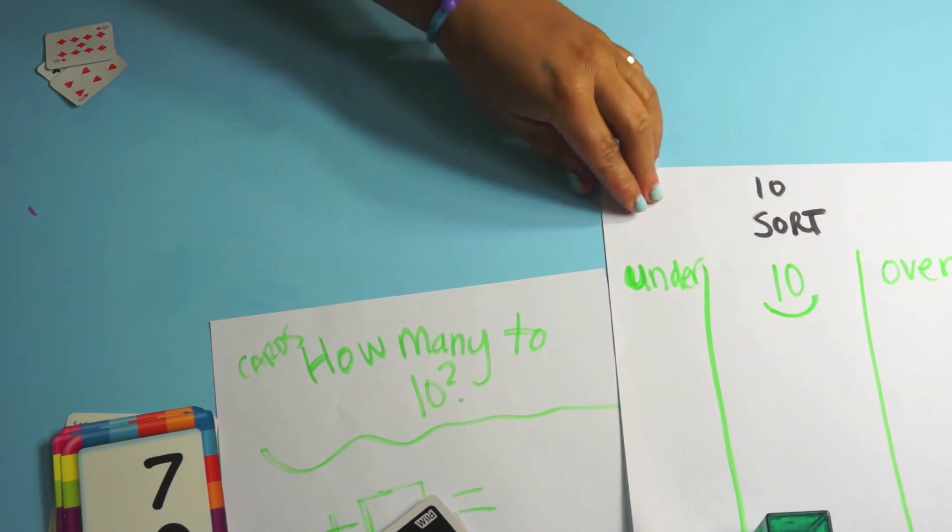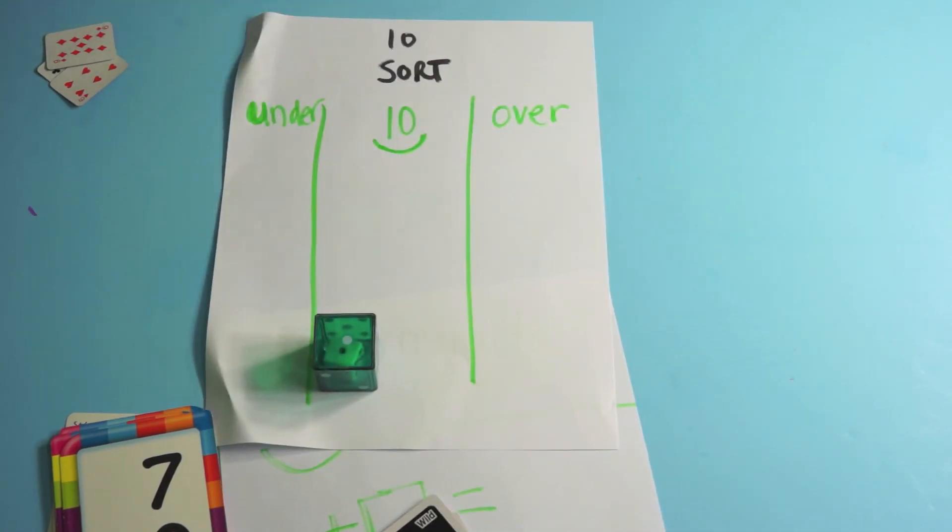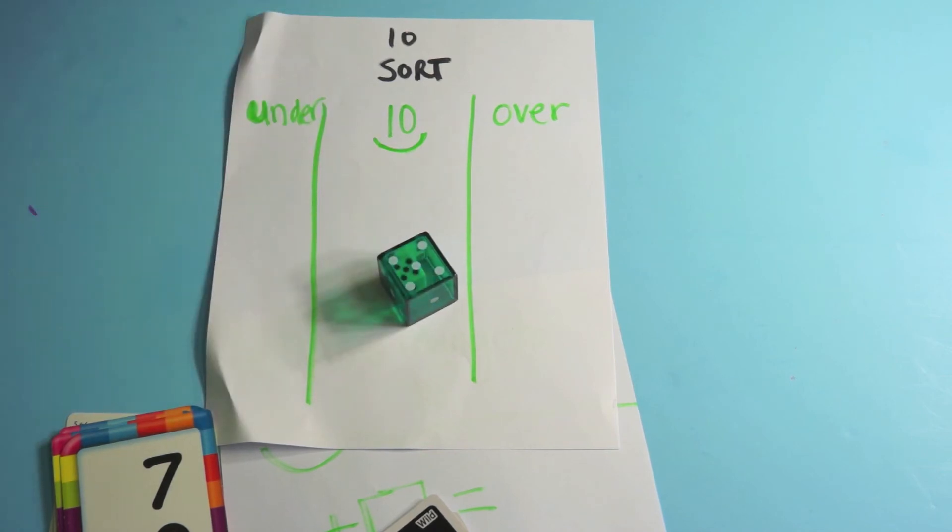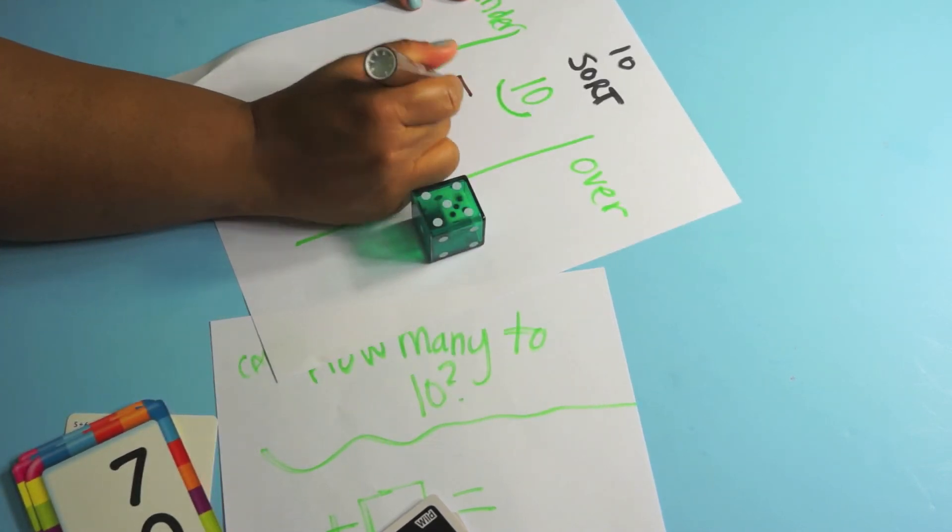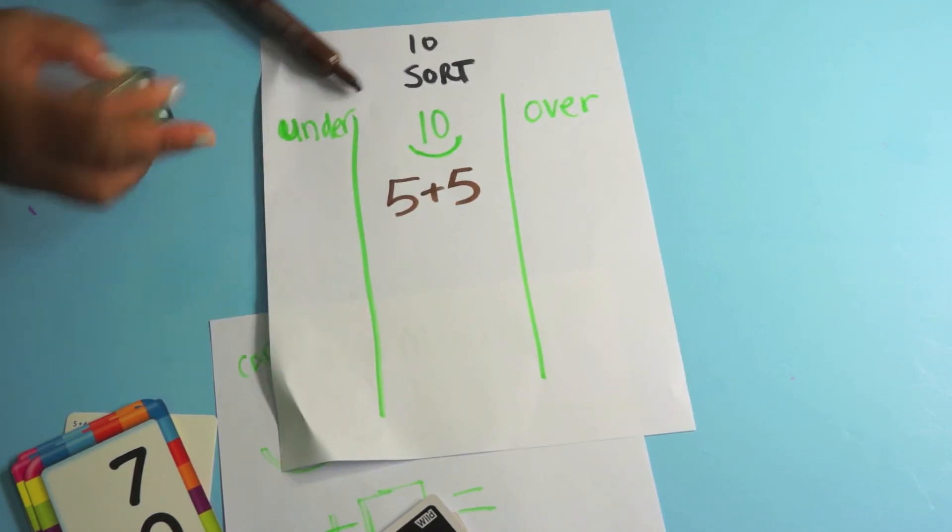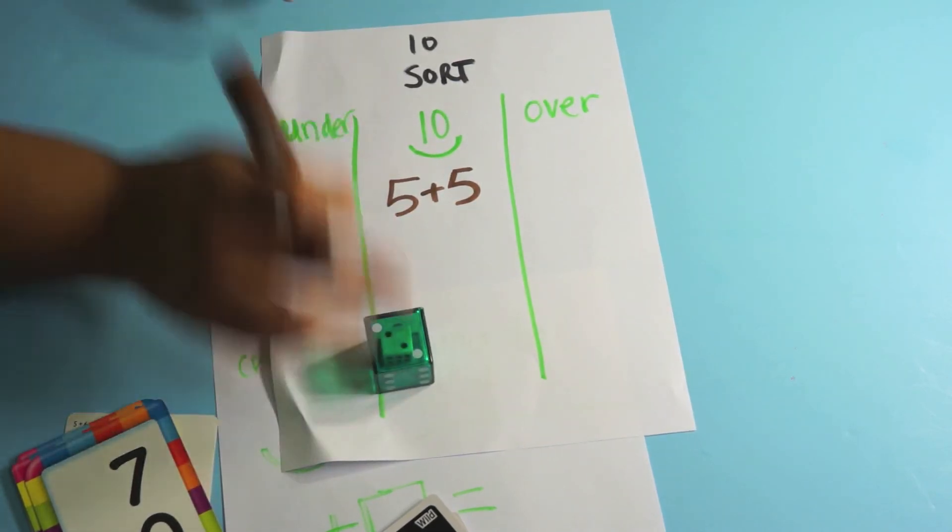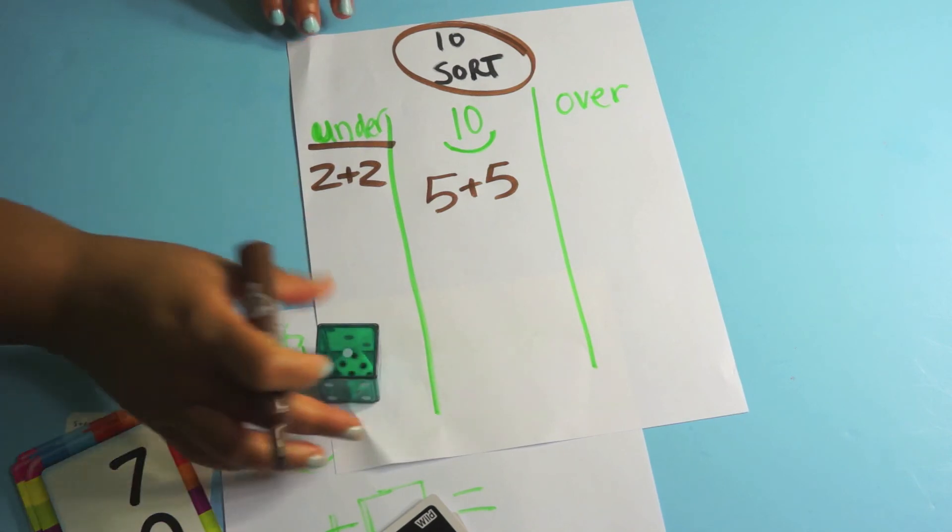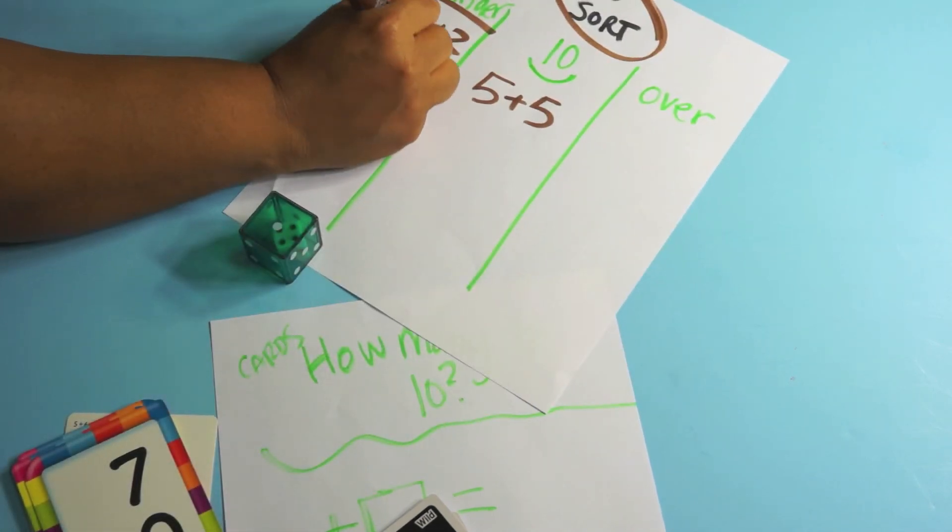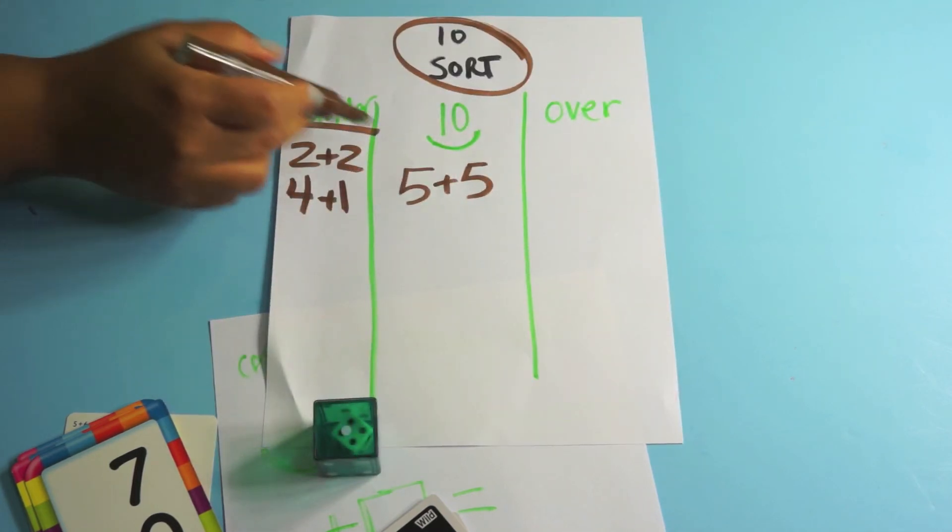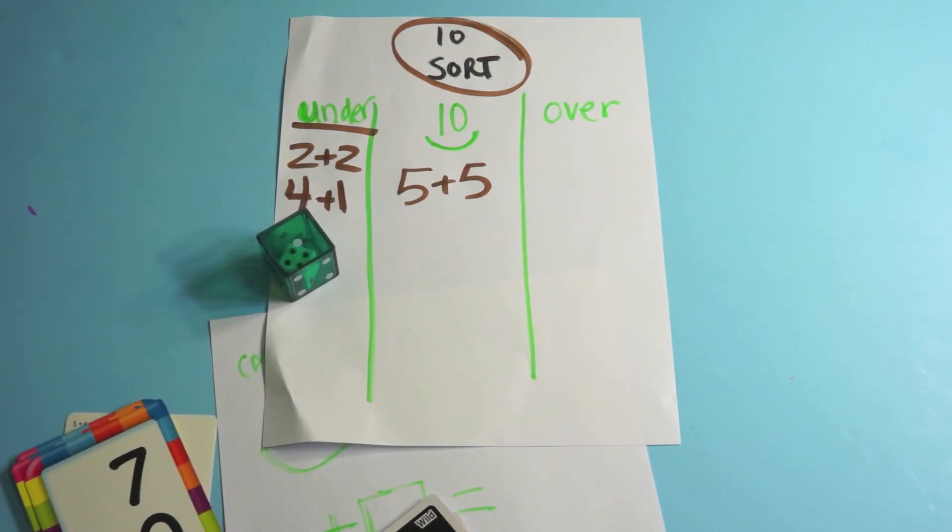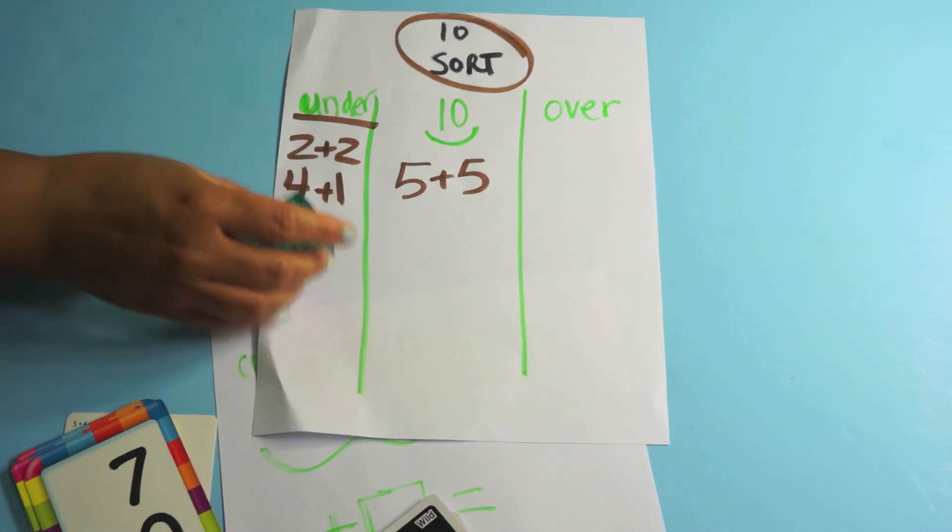Now another game you can play is sort. Right. So this is roll and sort. So the kids roll the dice and they get, I got 5 plus 5 and that's 10. So yay. And I write the expression right there, 5 plus 5. Right. Remember kids are supposed to be exposed to expressions and equations. 2 plus 2 is 4 and that's under. So I write it here because we're looking at the 10 sort. Now I roll another fact. 4 plus 1 is 5. So I write it here, 4 plus 1. Right. So I'm either going to get under or I'm going to get 10 or I'm going to get over. And they, you can play, the kids can play this by themselves or they can play it with a partner. They certainly can play it in a group. It doesn't matter. It's just a fun game and it gets them to sort their facts.